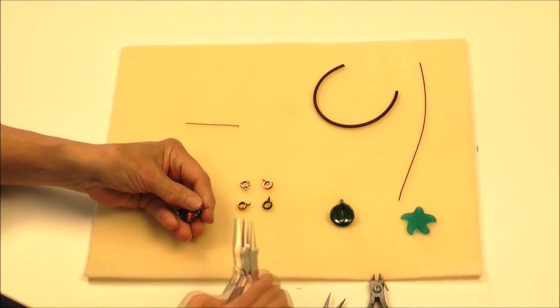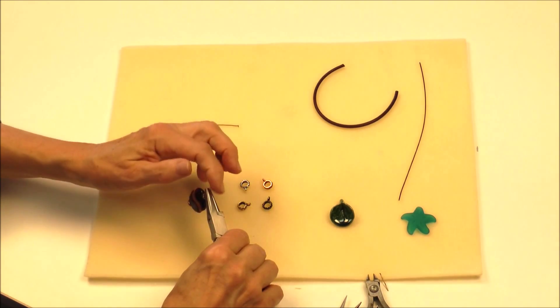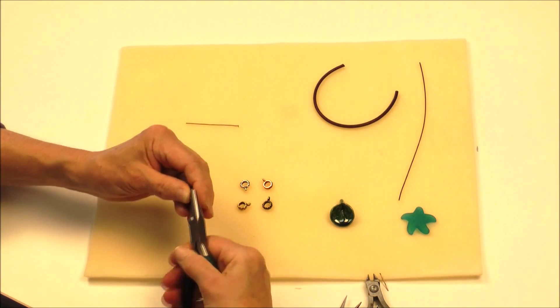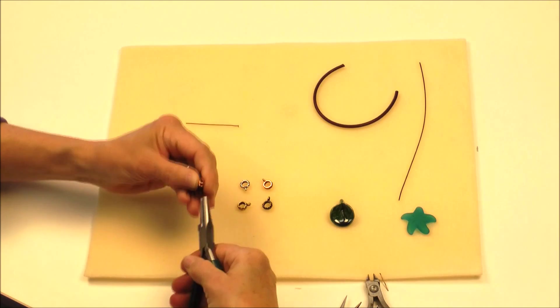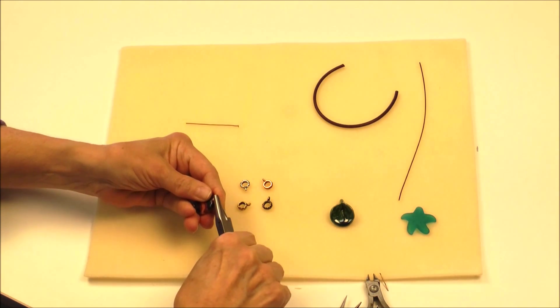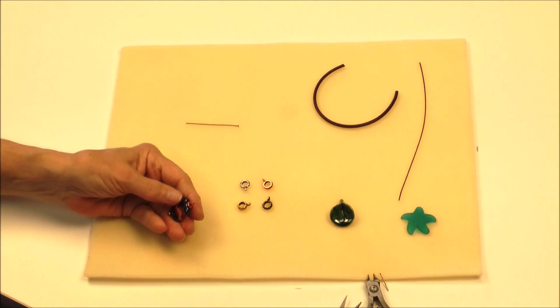And then I'll use my looping pliers to make a simple loop at the top. I set the top of the head pin in, just flush to the top of the pliers, roll it around and then I'll come back and straighten it up the other way. We do have a video that extensively covers simple loops.